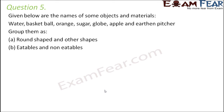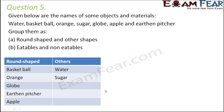Question number 5: given below are the names of some objects and materials — water, basketball, orange, sugar, globe, apple, and earthen pitcher. Group them as round shape and other shapes. Out of these objects, the round ones are: basketball, orange, globe, earthen pitcher, and apple — these are all more or less round in shape.